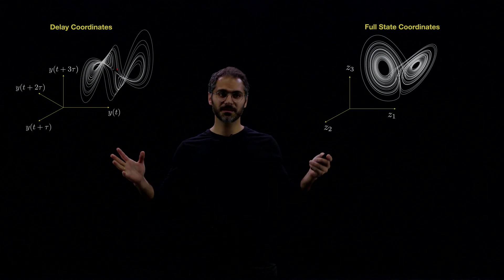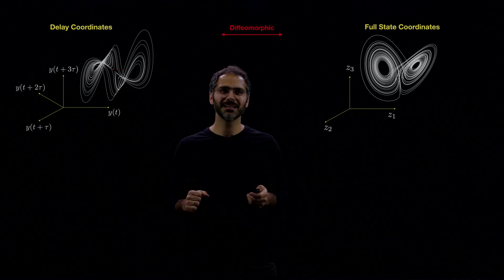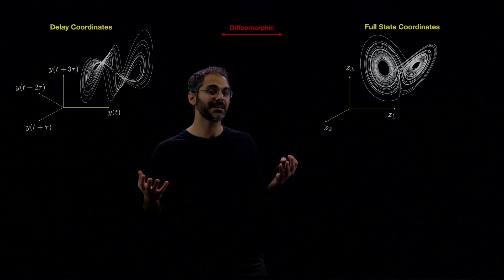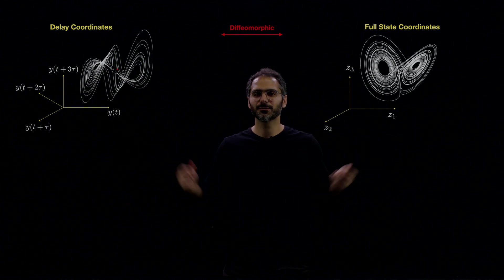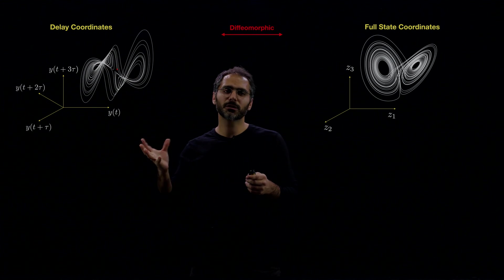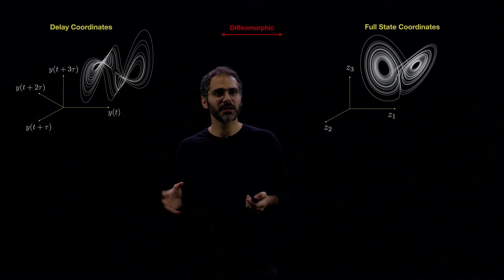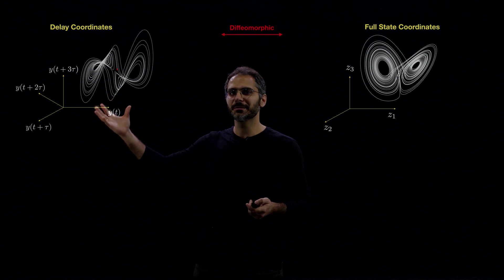Now, the last piece of this puzzle is this diffeomorphism. We know that it exists, but we don't know where it is. So how do we go from this side to this side? We don't know exactly what it looks like, but we know that it's very non-linear.